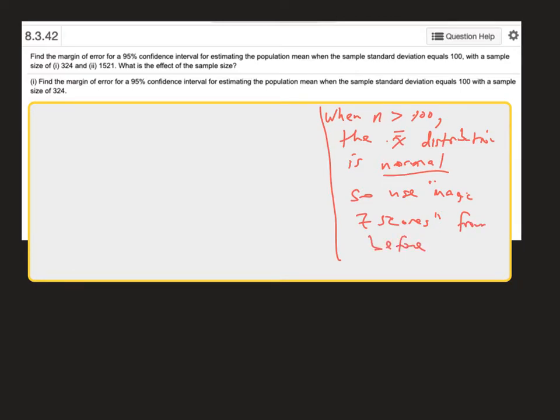And so that means that in these problems where we're finding a 95% confidence interval, we're going to use a magic z score of 1.96 for the 95% confidence interval, the same way we were doing when we were building confidence intervals for proportions.